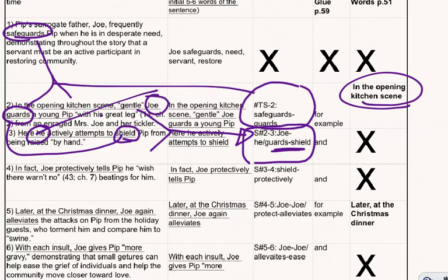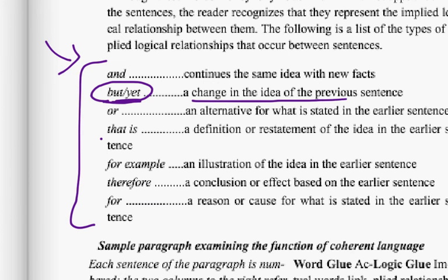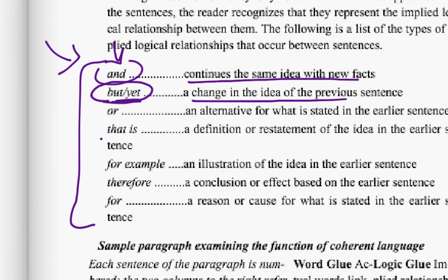Now that's what the UE chart can't pick up, are synonyms. It can pick up exact word repetitions like Joe, Joe, but it won't pick up synonyms. So you want to go back and add them. And so we're saying that the logical reason we wrote sentence number three is we're continuing the same idea with new facts. So remember, we're choosing one of these seven words to place in this chart, in this column.